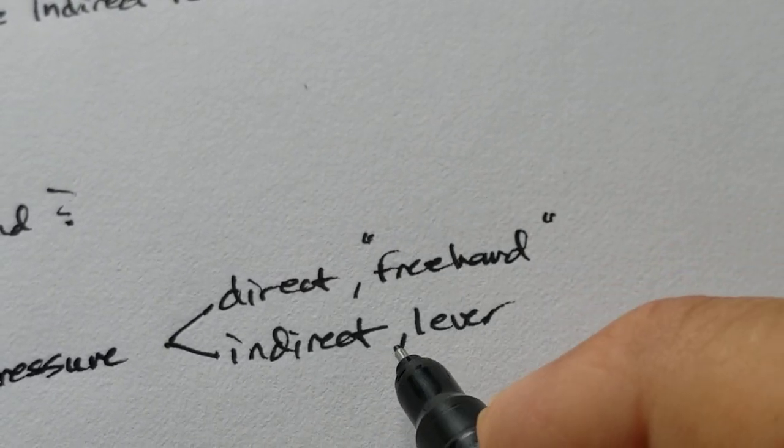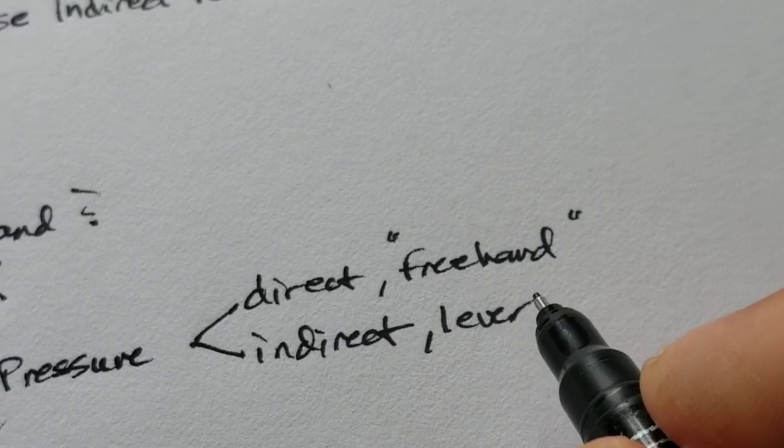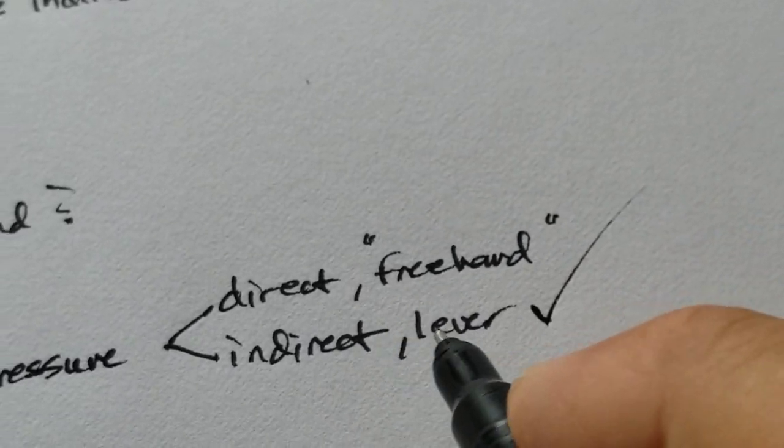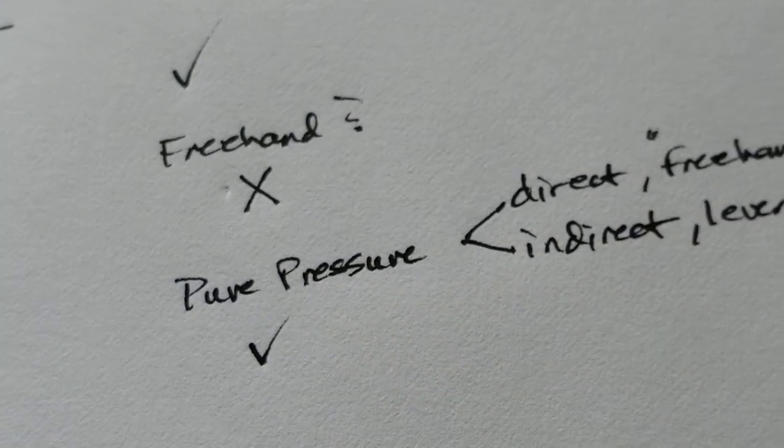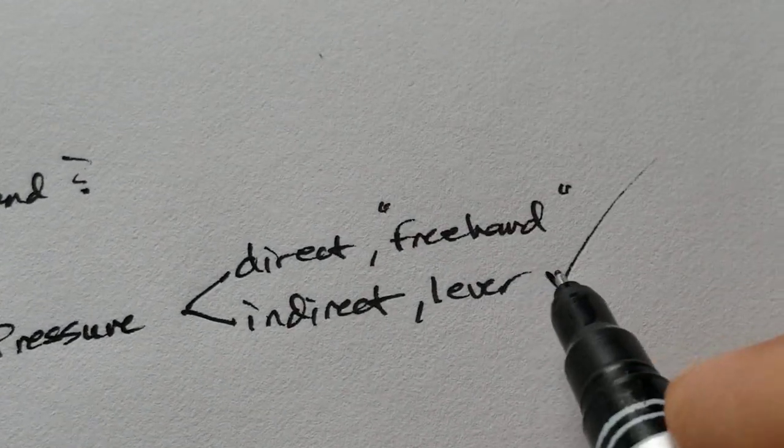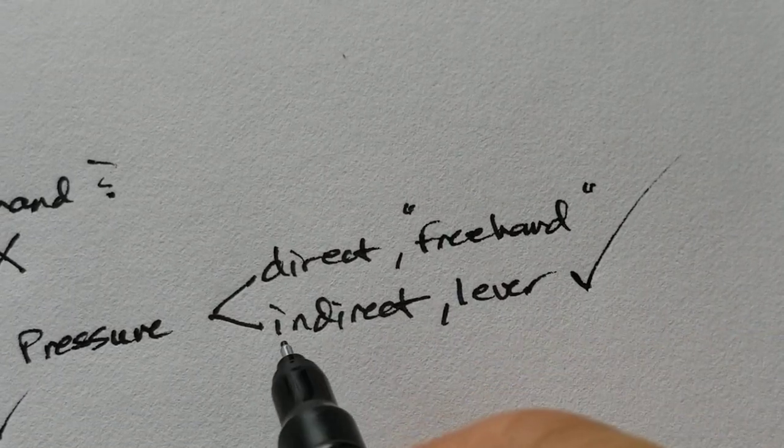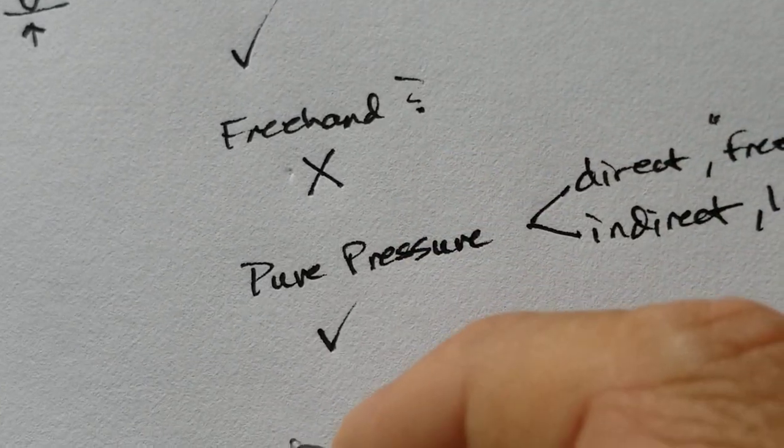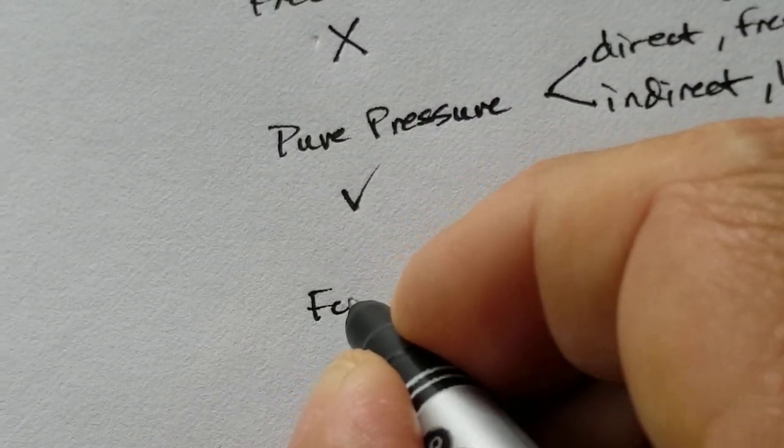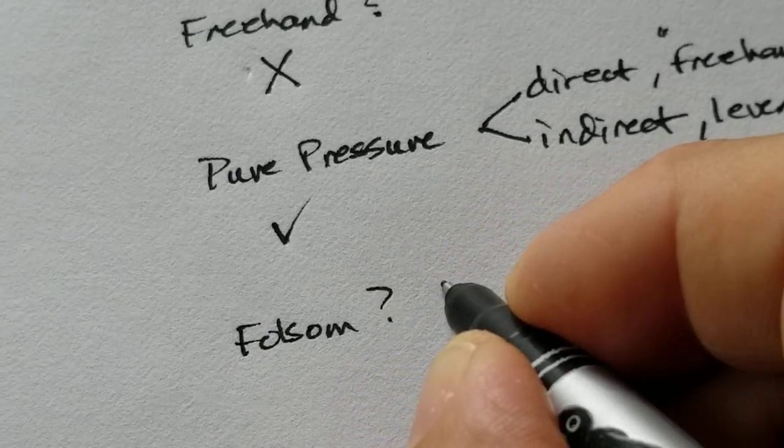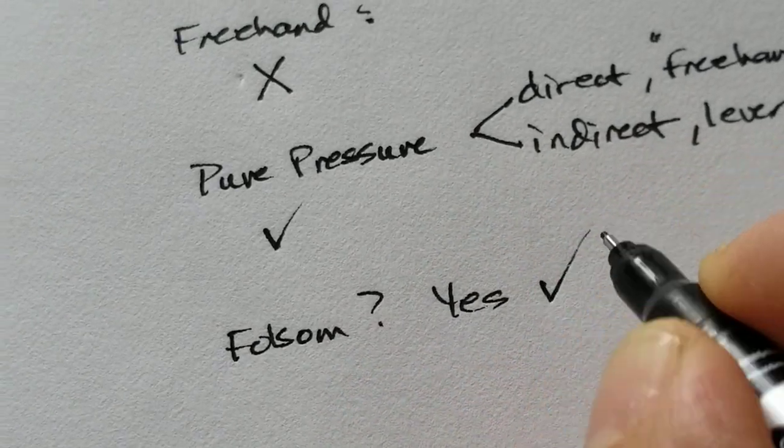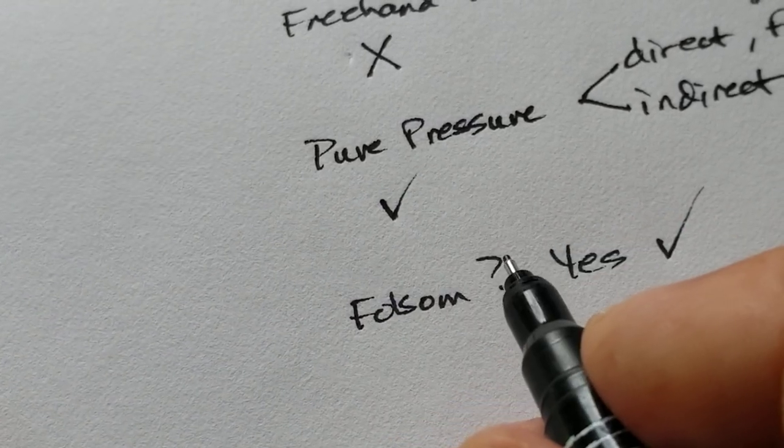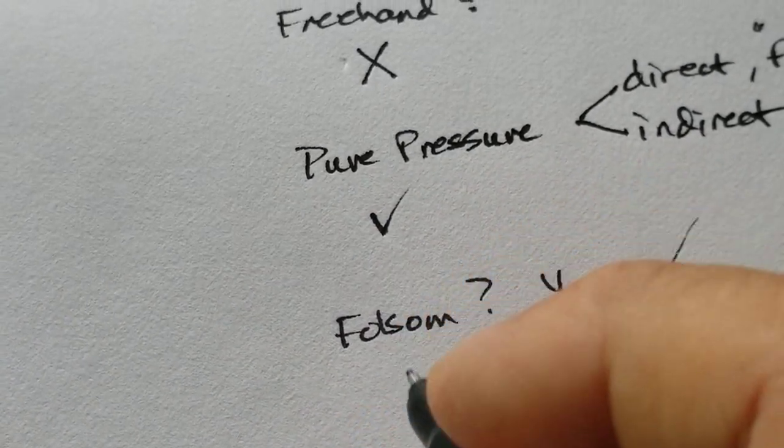But with indirect pressure, there's a lever. Now, this is where I favor, as far as the pressure technique for Cumberland, I tend to lean toward the indirect pressure or a lever. Now, do I think that it was done with Folsom? Yes. Cumberland and Folsom are very similar technologies, except for one very big difference: thinness.